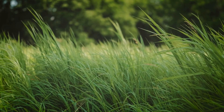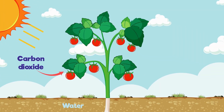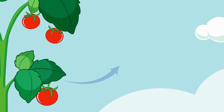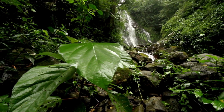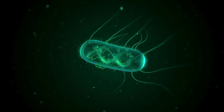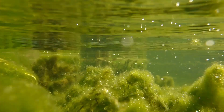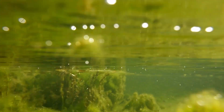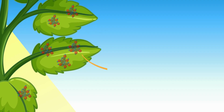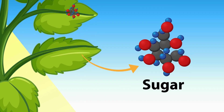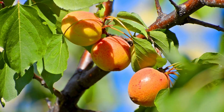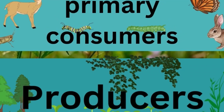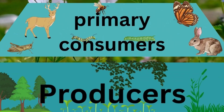Producers are organisms that obtain their energy through chemistry. In most terrestrial and aquatic ecosystems, this is primarily through a process called photosynthesis. Plants and algae are all able to use inorganic compounds like carbon dioxide and water, use the sun's energy, and convert them into organic usable compounds like glucose. These organisms then use that glucose to produce more roots, leaves, fruits, and seeds, which are then consumed by the primary consumers, the herbivores of an ecosystem.